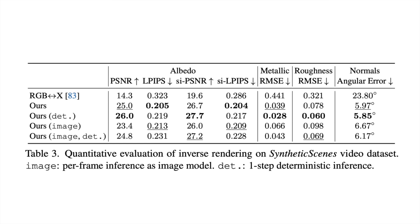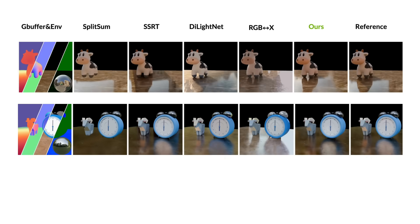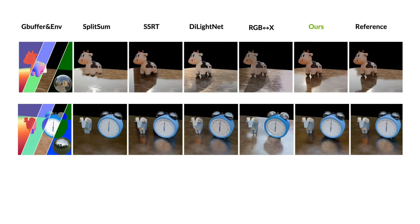Importantly, the video-based approach reduces errors in specular properties, cutting RMSE for roughness and metallic attributes by up to 41% compared to image-based models.